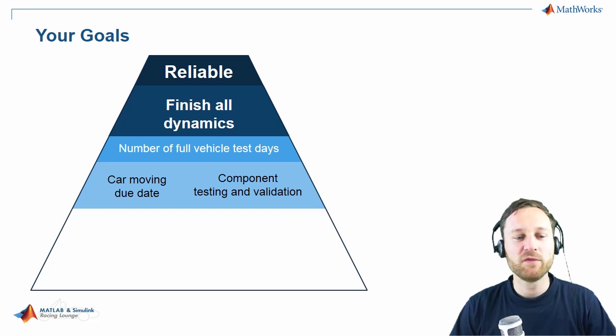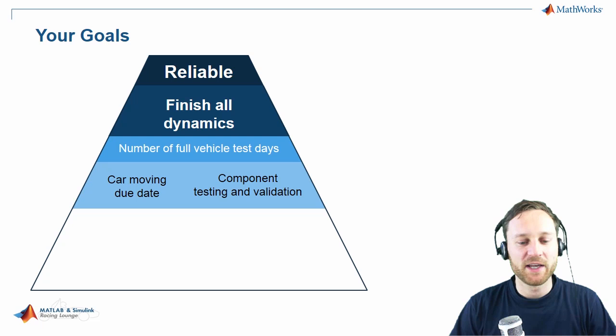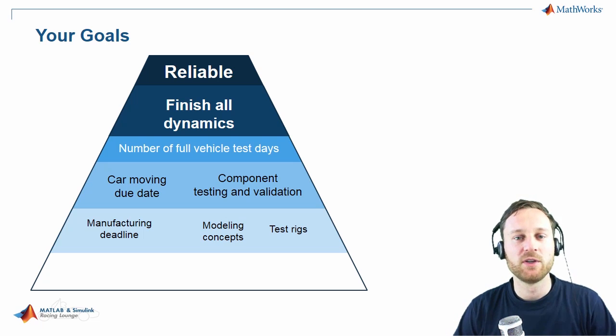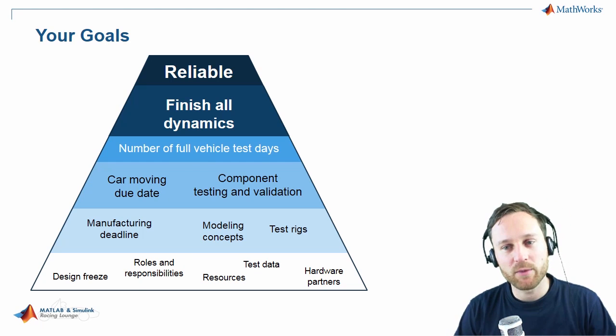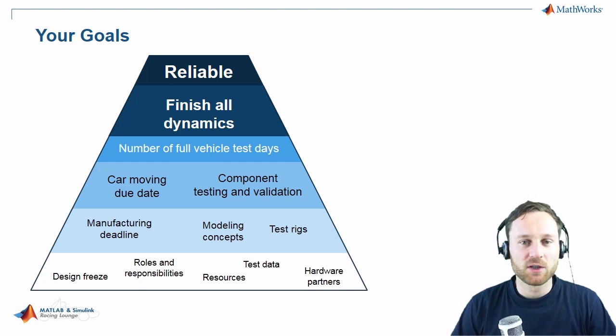If you successfully finish 10 endurance runs while testing, you can be quite sure that you can make it during the event. But still, what does that mean? What does that require? You have to break it down further. That means your car has to move at a certain time way before the event. All components should be tested. All tests should be validated.